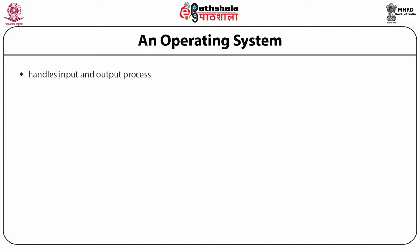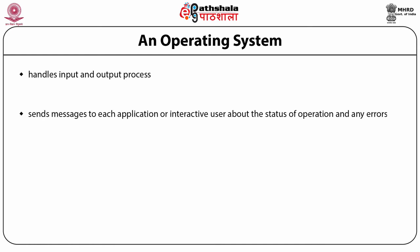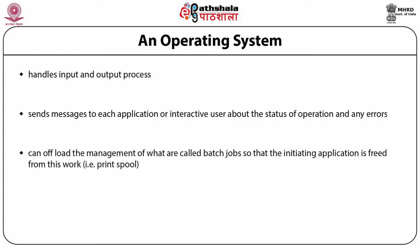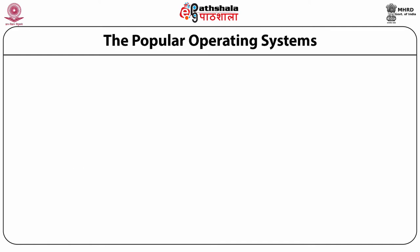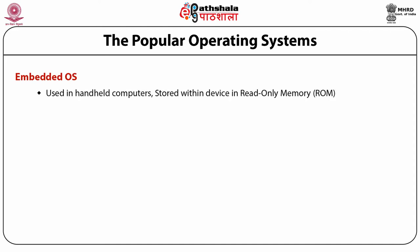An operating system handles input and output processes, sends messages to each application or interactive user about the status of operations and errors. It can offload the management of batch jobs so that the initiating application is freed from the work, and manages how to divide the program in the case of parallel processing.